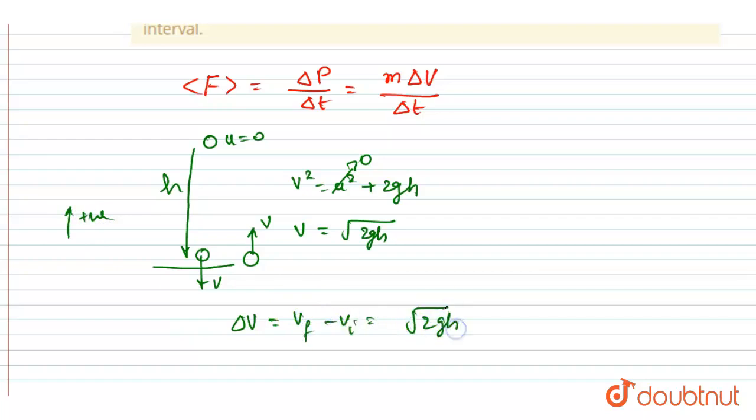Change in velocity I will take final minus initial velocity, and final velocity is plus √(2gh) and minus initial velocity that is minus √(2gh). So this will be the expression and it is 2√(2gh).